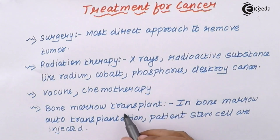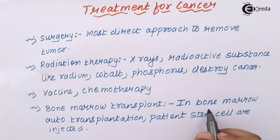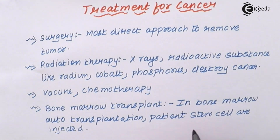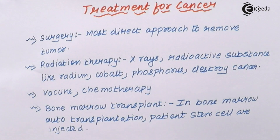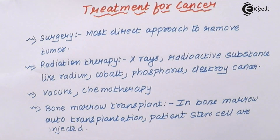Bone marrow transplant is a newer option available for cancer treatment, though not yet widely popular. In this procedure, auto-transplantation of the patient's own stem cells is done. Stem cells are those cells in our body that have the ability to regenerate into any other type of cell. If the stem cells of a particular patient are preserved, those stem cells can be used for the formation of any other organs, cells, or tissues. This can be considered a preventive option — if somebody gets cancer in the future, they can be cured in this manner. However, it is one of the more expensive processes available today.